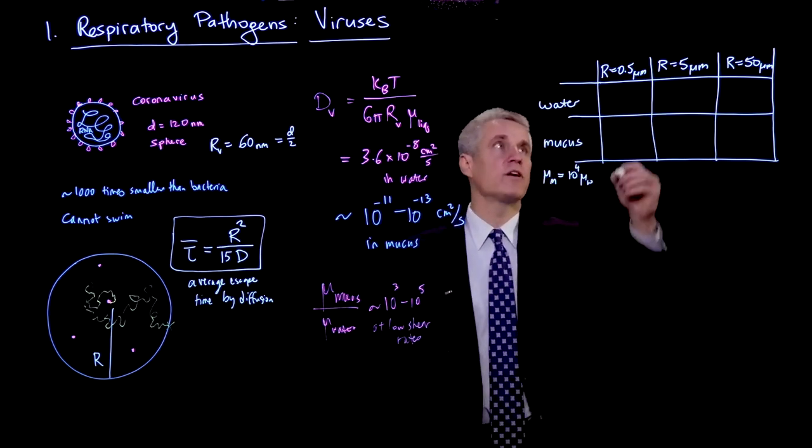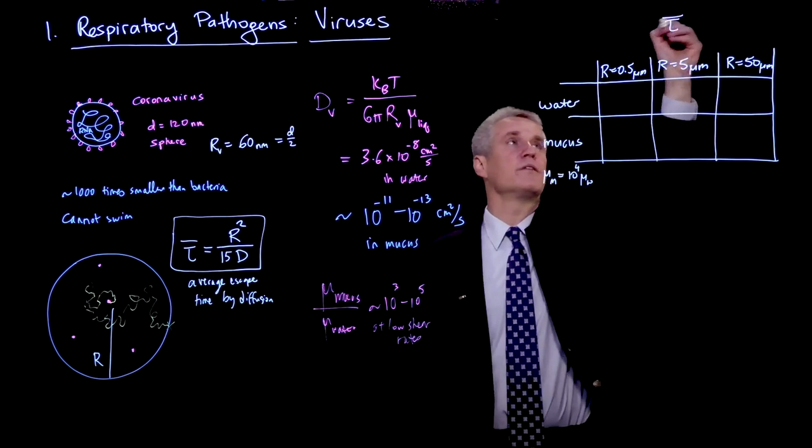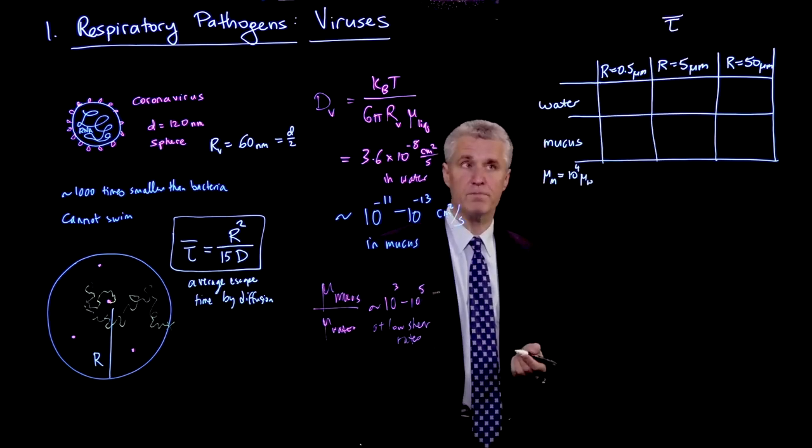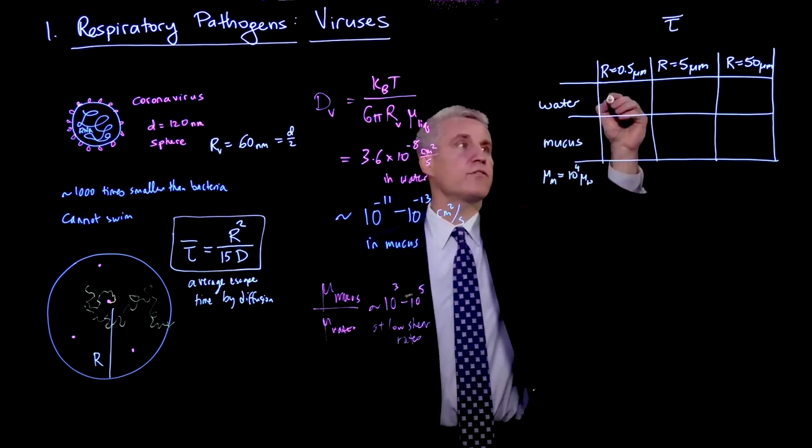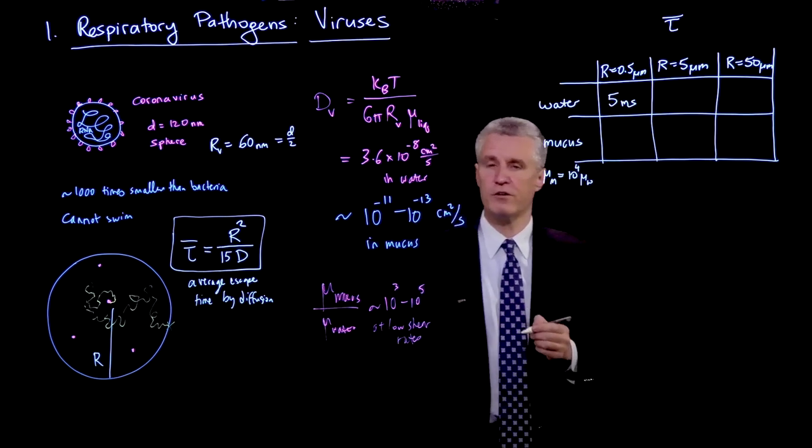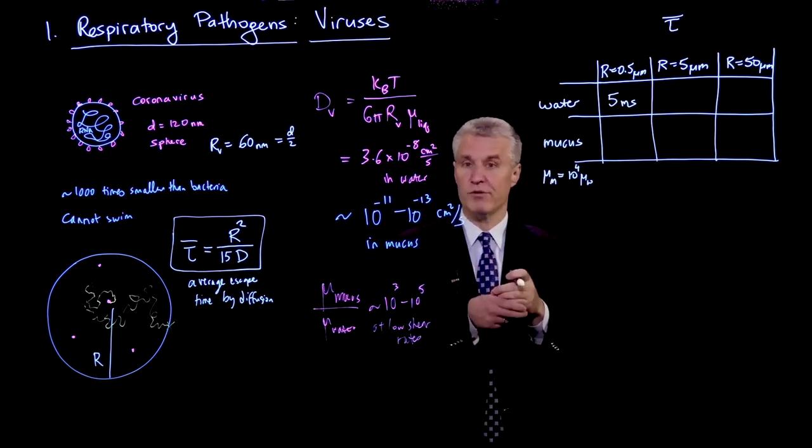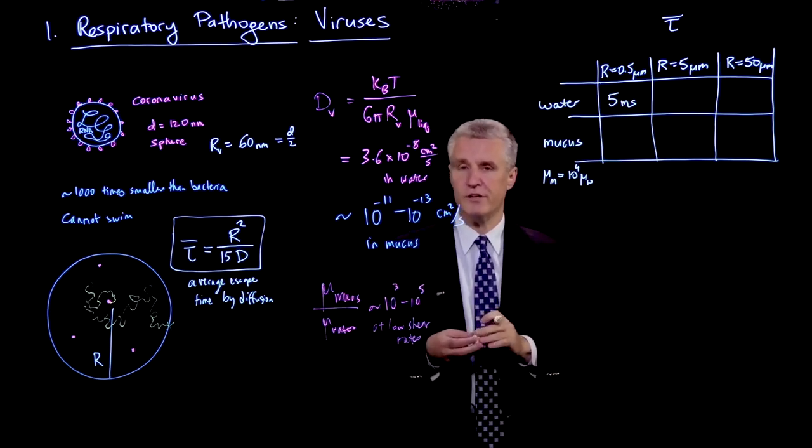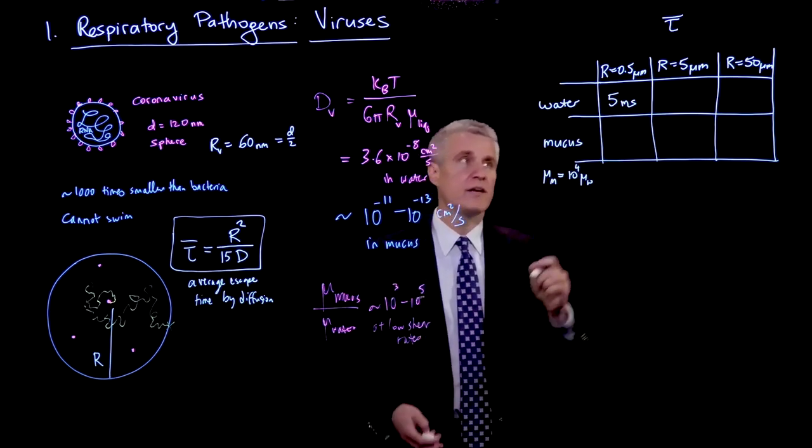Well, if we plug in then the numbers, and we try to plot the average escape time that I've just written here, R squared over 15D, then in water, this turns out to be about 5 milliseconds for aerosol droplet. So we know the aerosol droplets are evaporating quickly. And also, the virus can diffuse out of it relatively quickly, because the water is not really that viscous.